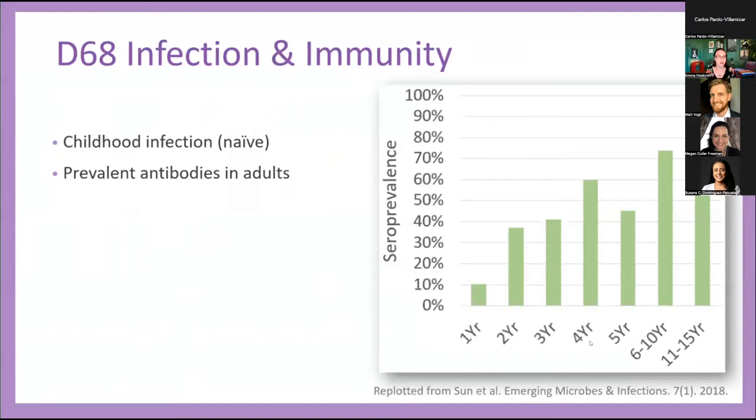For D68 antibodies in adults, we find them in pretty much everyone. And another thing I think is really interesting is that these titers—